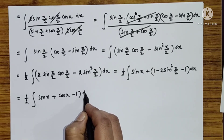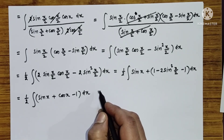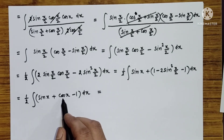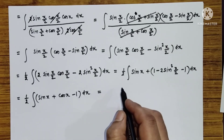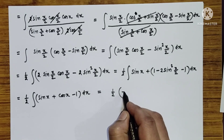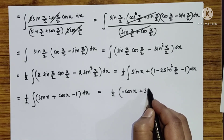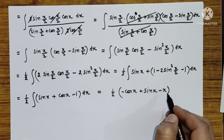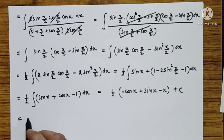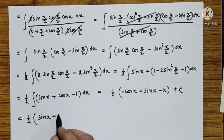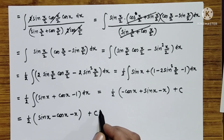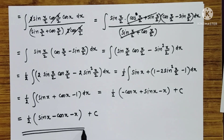The integration of sin x is minus cos x and integration of cos x is sin x, so the result is half times (minus cos x plus sin x minus x) plus constant of integration. Rewriting: half times (sin x minus cos x minus x) plus C. This is the required integration answer. Thank you all so much for watching it patiently.